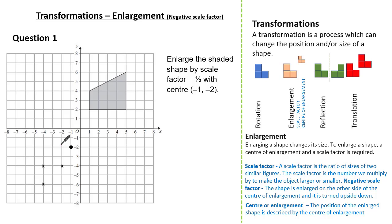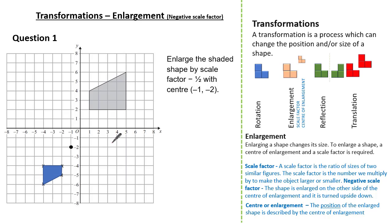The last vertex is two to the right and six up from the centre. Our scale factor is minus one half, so we do the opposite and halve: two to the right and six up becomes one to the left and three down. Now you can see our enlarged shape by a scale factor of minus one half. Drawing our shape, you can see it is inverted and on the opposite side of our centre of enlargement.